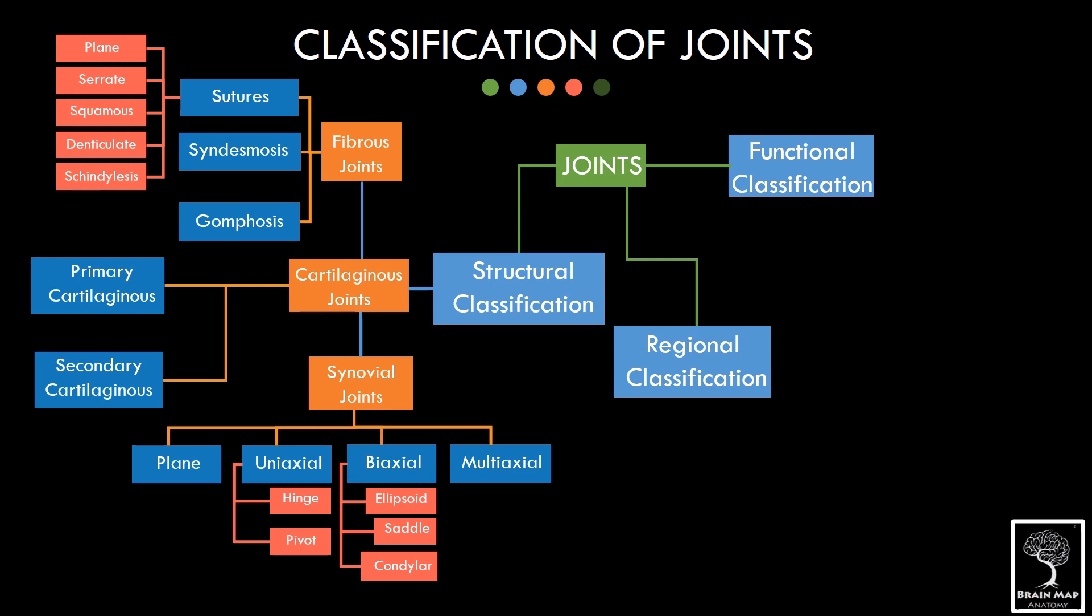Multiaxial varieties are the ball and socket joints seen in shoulder and hip. And by that, we finish the structural classification.